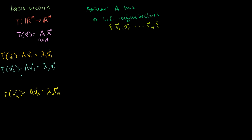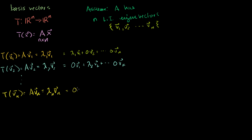Now, what are these also equal to? This is the same thing as lambda 1 times V1 plus 0 times V2 plus all the way to 0 times Vn. The second one is 0 times V1 plus lambda 2 times V2 plus 0 times all the other vectors. And the last one is 0 times V1 plus 0 times V2 plus 0 times all of these basis vectors, but lambda n times Vn. I just rewrote each as itself plus a bunch of zero vectors — because in a moment we're going to take this as a basis and find coordinates with respect to it.